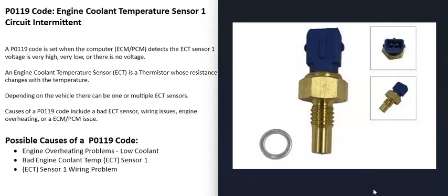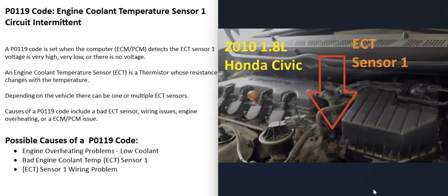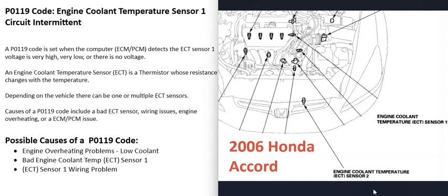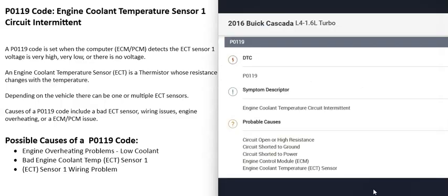When you get this P0119 code, the computer is seeing some kind of problem with this sensor, so it's going to need to be troubleshot. One thing to note: there can be just one ECT sensor, but sometimes there are two or even three. It's going to vary, so it's a good idea to get a diagram showing where all these sensors are located for that particular vehicle.